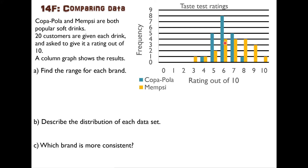Looking at the graph, for example, one person gave Mempsi a three, and one person gave Mempsi a 10. No one gave Copapola a 10 out of 10. They're quite different — it's not just a case of which is better. They're good in different ways.